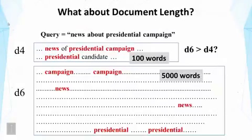So far in the lectures about the vector space model, we have used various signals from the document to assess the matching of the document with the query. In particular, we have considered the term frequency — the count of a term in a document. We have also considered its global statistics, such as IDF, inverse document frequency. But we have not considered the document length.